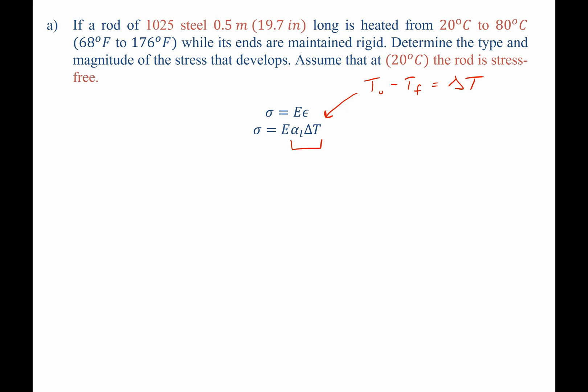Now what we need is we need to know what the thermal expansion and the modulus of elasticity are for 1025 steel. Looking them up in the appendix, we find that a good match for the modulus of elasticity is 207 gigapascals, which is simply 207 times 10 to the third megapascals. Meanwhile, for the thermal expansion coefficient, we find it is 11.7 ppm per degree Celsius, which is simply 11.7 times 10 to the negative sixth per degree Celsius.